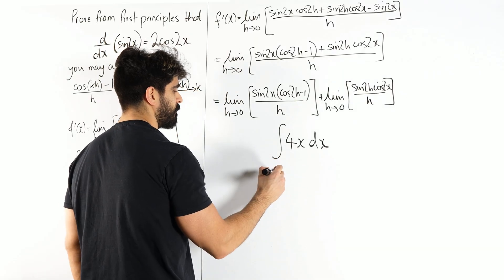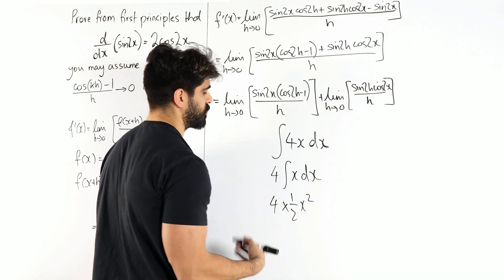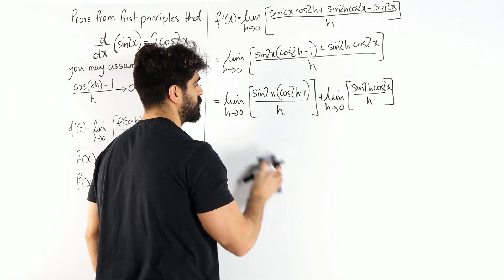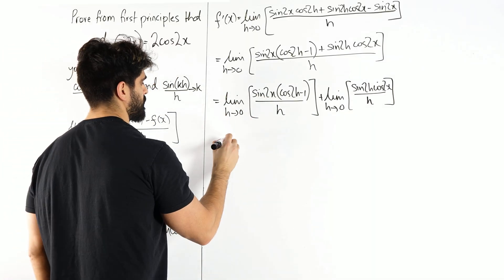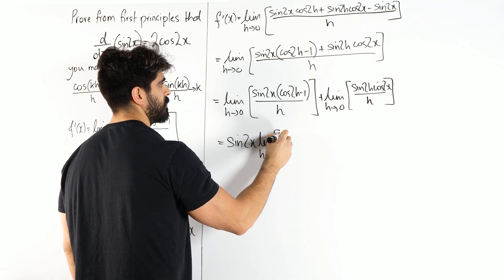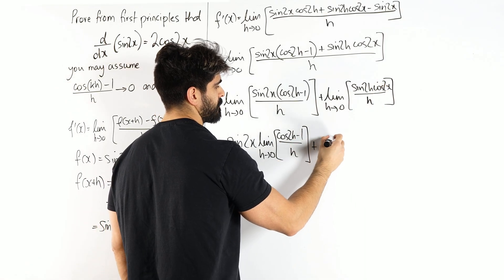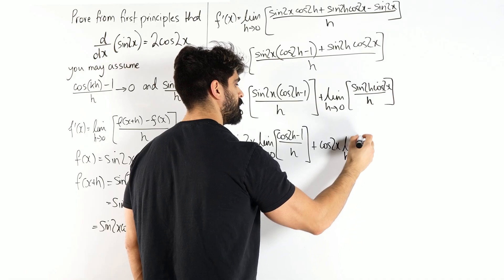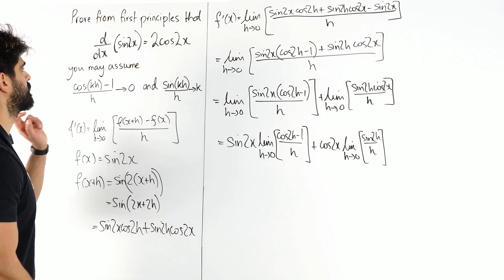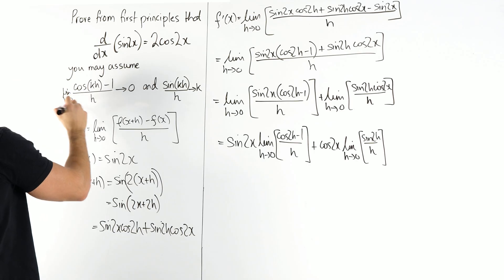Just as with integrating 4x you can take the 4 outside the integral — here, what does not depend on h? What is independent of h? Sine 2x is not changing as h changes, so it can come outside. We get sine 2x times the limit as h tends to 0 of cos 2h minus 1 all over h, plus cos 2x times the limit as h tends to 0 of sine 2h over h.